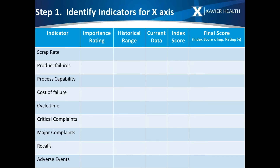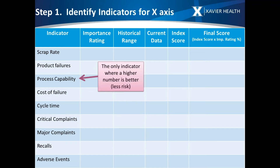Step one: identify the indicators for the x-axis, which in our example is the drug component. We'll look at scrap rate, product failures, process capability, cost of failure, cycle time, critical complaints, major complaints, recalls, and adverse events. Those are the indicators we've decided to roll into the x-axis risk profile for the drug. One thing to point out: in all cases, having a lower score is better — fewer scraps, fewer product failures, et cetera.